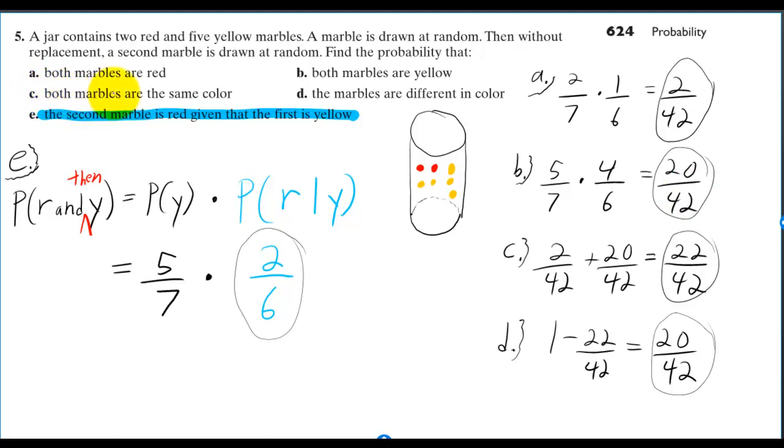If we want the probability that both marbles are the same color, then we add up the probability that both marbles are red and the probability that both marbles are yellow to get 22 out of 42.